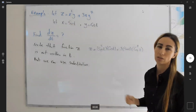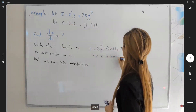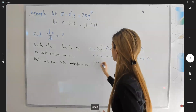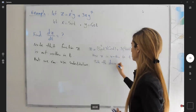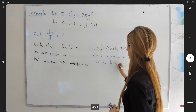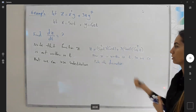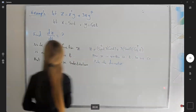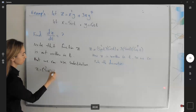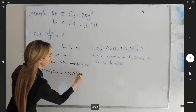Here I need to apply the product rule. Now z is written in t, so we can take the derivative directly. So my z is equal to sine squared t times cosine t plus three sine t times cosine to the fourth t.